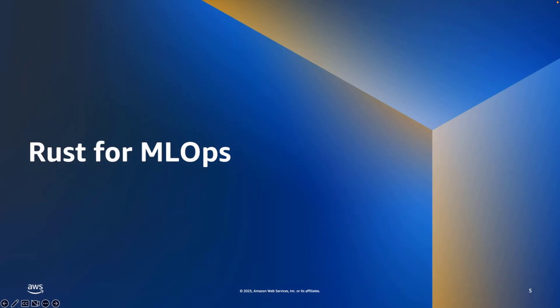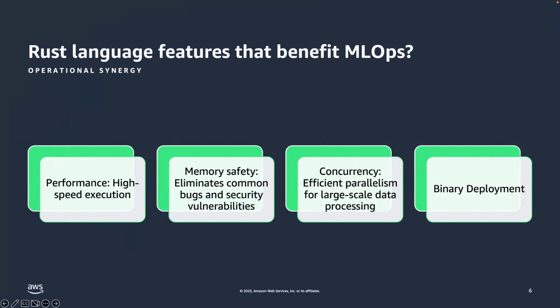Let's get into Rust for ML Ops and talk about performance, memory safety, concurrency features, and some popular Rust libraries. The key reason people care about Rust for ML Ops is the performance benefits when compared to a language like Python — it can be anywhere from 50 to 1,000 times faster because of the compiled nature and low memory usage. Rust performance can lead to faster model training and inference, which reduces cost, and everything about cloud computing is about optimizing cost. With memory safety, you eliminate common bugs and security vulnerabilities, which is critical for ML Ops where large datasets and models can lead to memory-related issues.